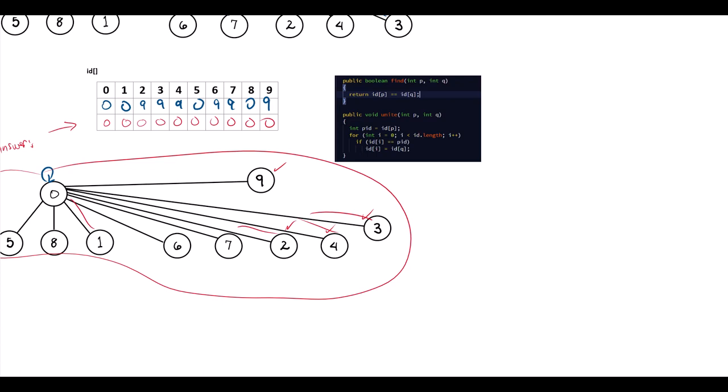So after having walked through the algorithm graphically, this code that represents the find and the union or connect type of application or implementation, should make more sense. So since we saw that we had three and eight, and we're calling the guy on the left P and the guy on the right Q. And so what we do is we go ahead and take ID sub P.